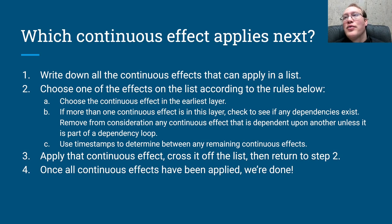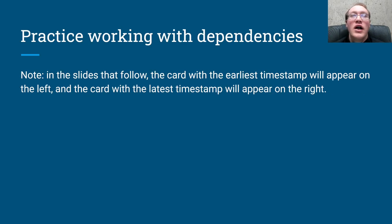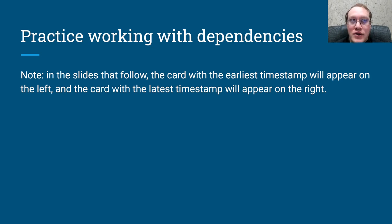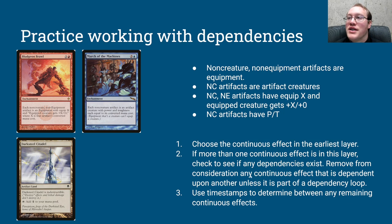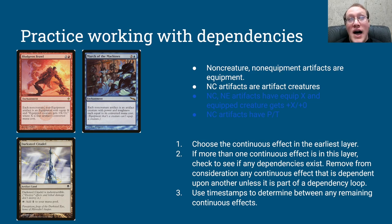Now we're ready for some practice using the procedure we talked about to determine the end result of some continuous effects. One thing to point out: in the slides that follow, the convention is that the earliest timestamp is on the left and the latest timestamp is on the right. So here we go — Bludgeon Brawl and March of the Machines. There are four continuous effects from just these two cards that we need to apply. We're going to say Dark Steel Citadel is the only relevant permanent they could apply to. The first thing we do is choose the continuous effect in the earliest layer. I'm going to gray out the ones that are not from the earliest layer, so we're down to just two.